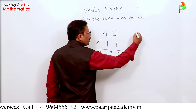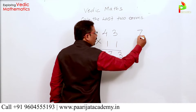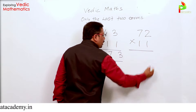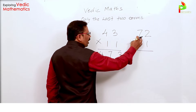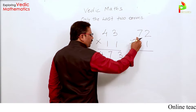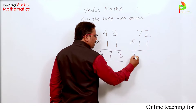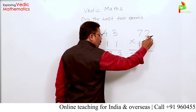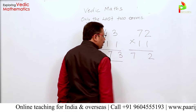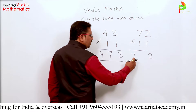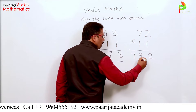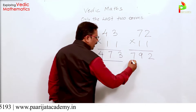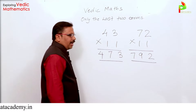Let me take one more example: 72 multiplied by 11. Again, I keep the first digit 7 at the left-hand side and the right digit 2 at the right-hand side. Then I add 7 plus 2, which is 9, and place that addition between 7 and 2. My answer is 792.